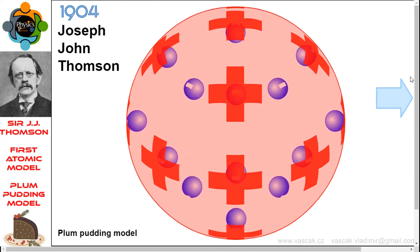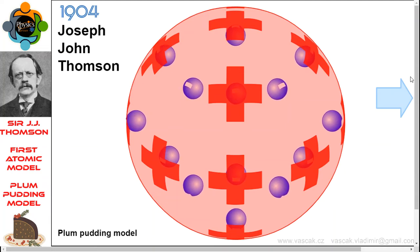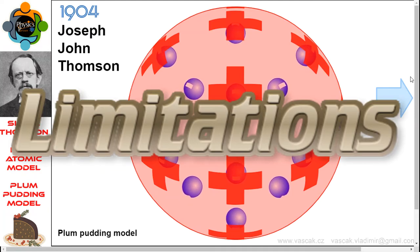with electrons (negatively charged particles) present within the sphere. Because the magnitude of the positive and negative charges is equal, an atom has no charge overall and is electrically neutral.